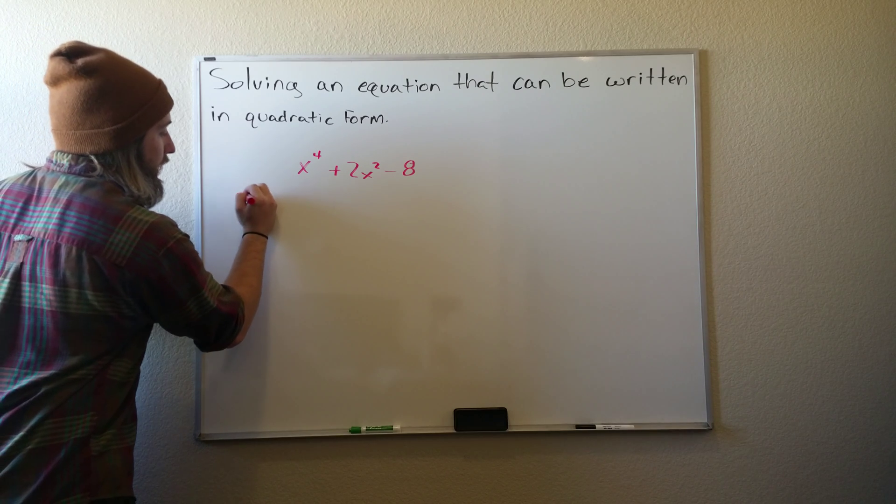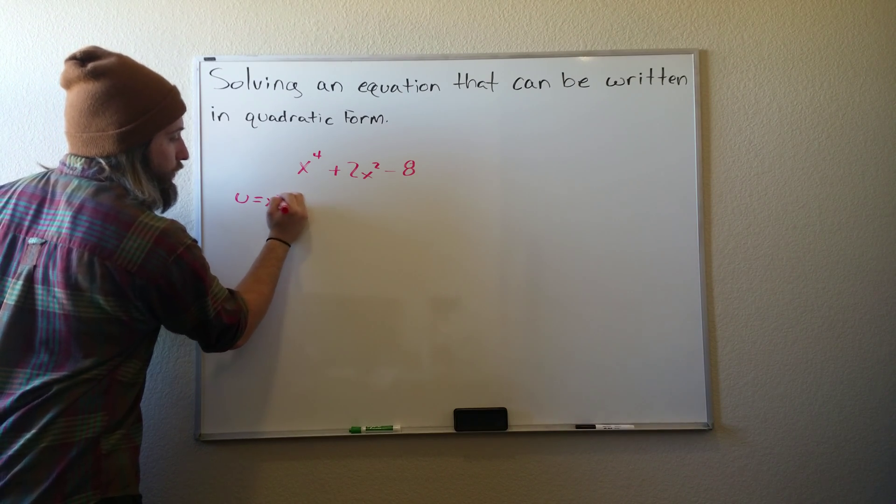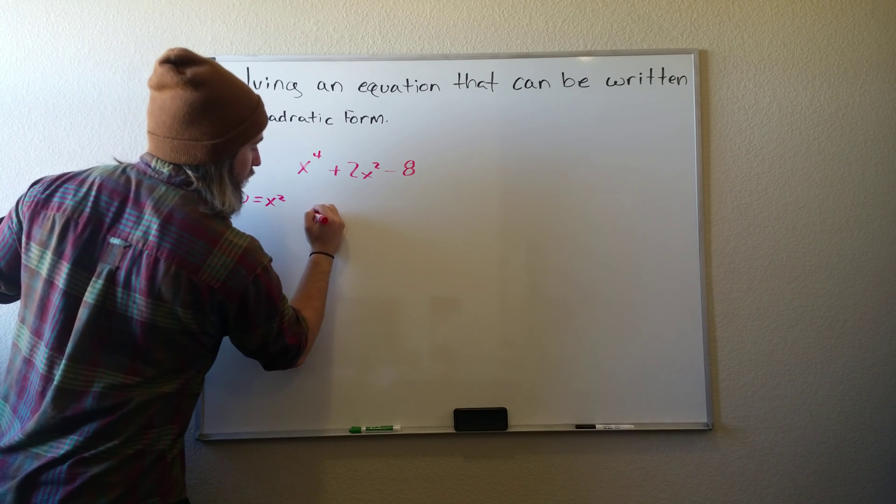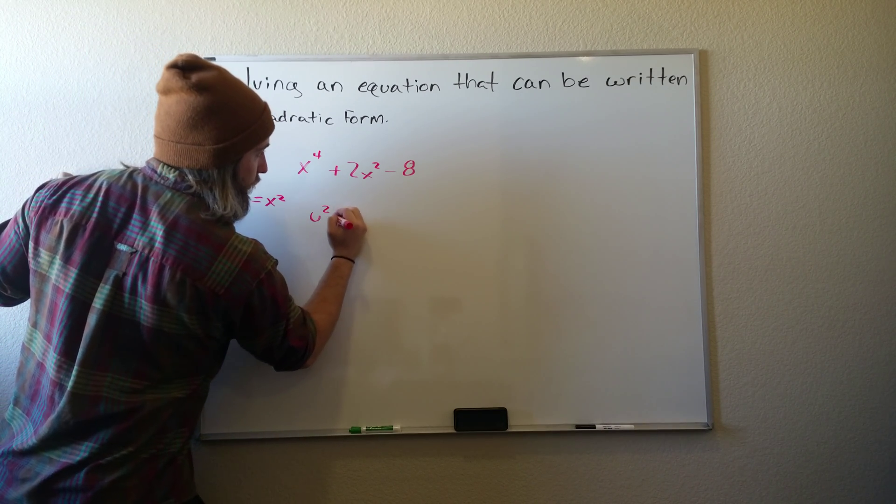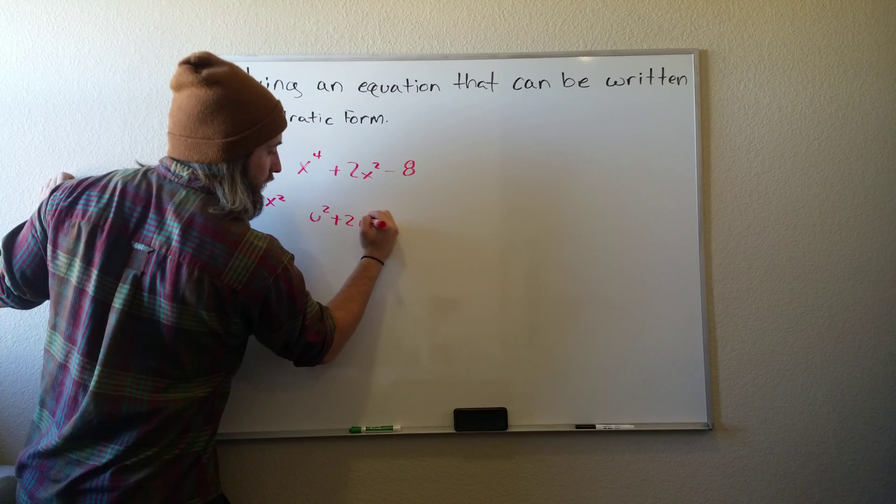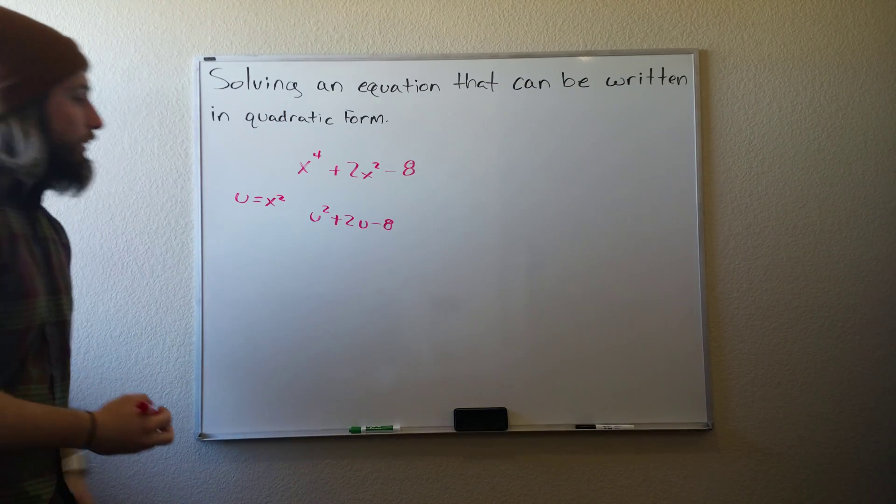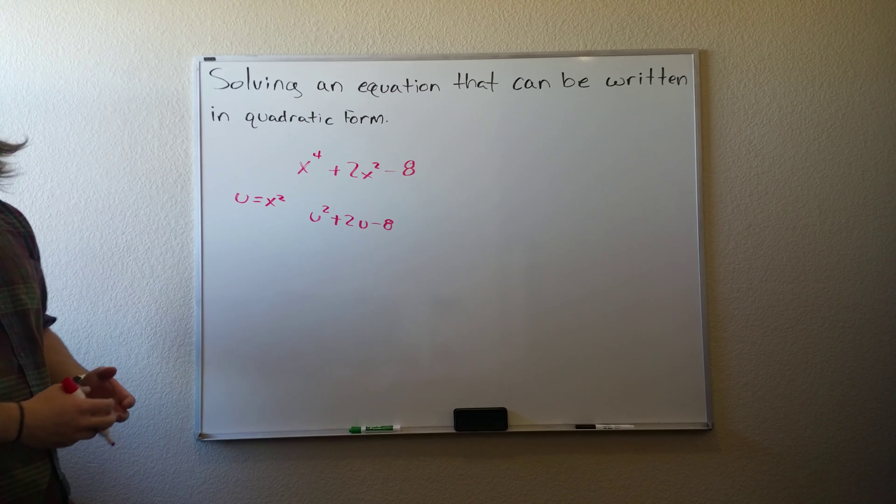So let's set u equal to x squared. That way when we substitute the u in, we'll get u squared plus 2 times u minus 8. And that's something that's in a quadratic form that we know how to work with.